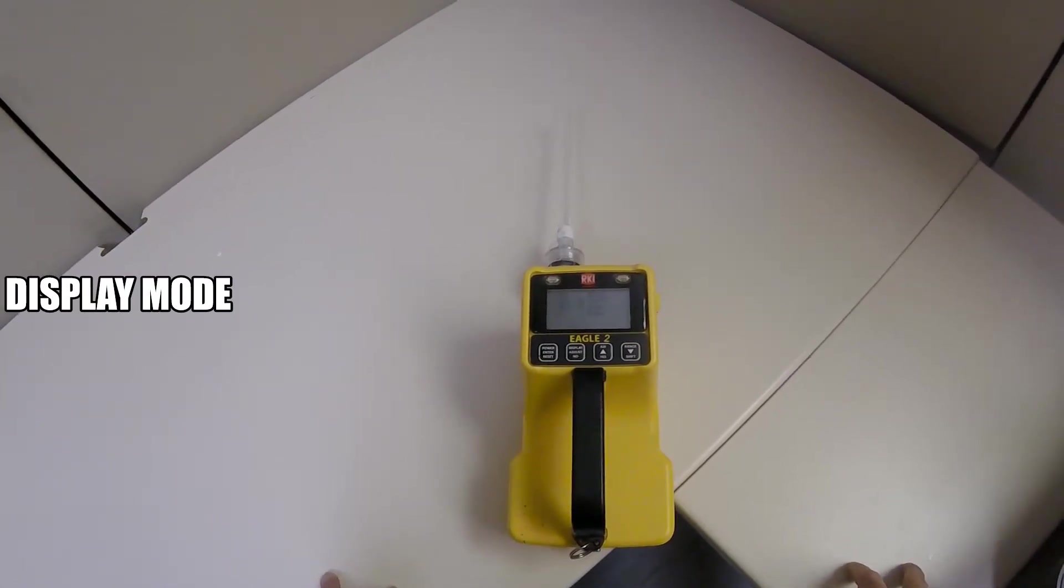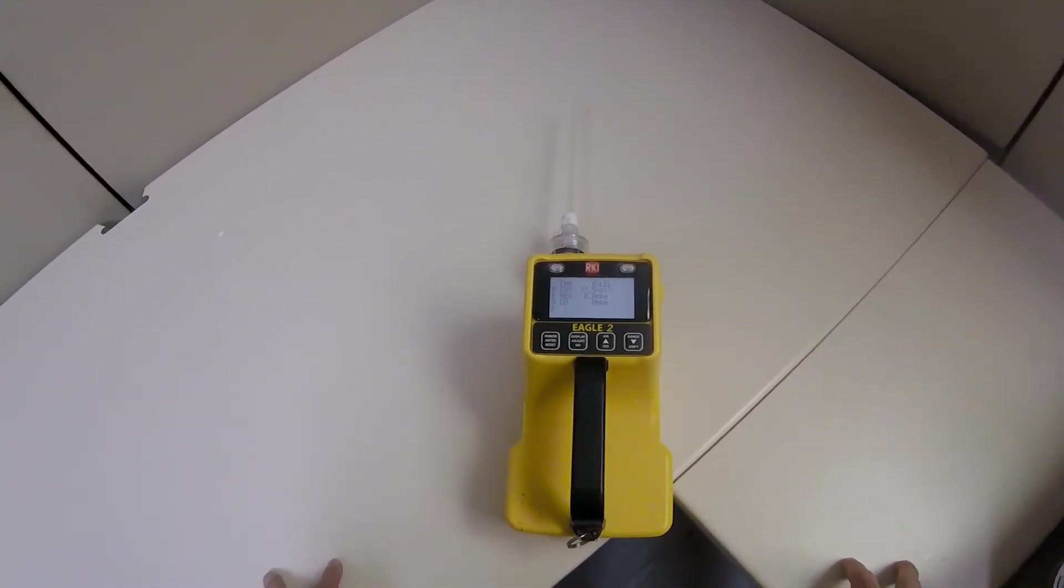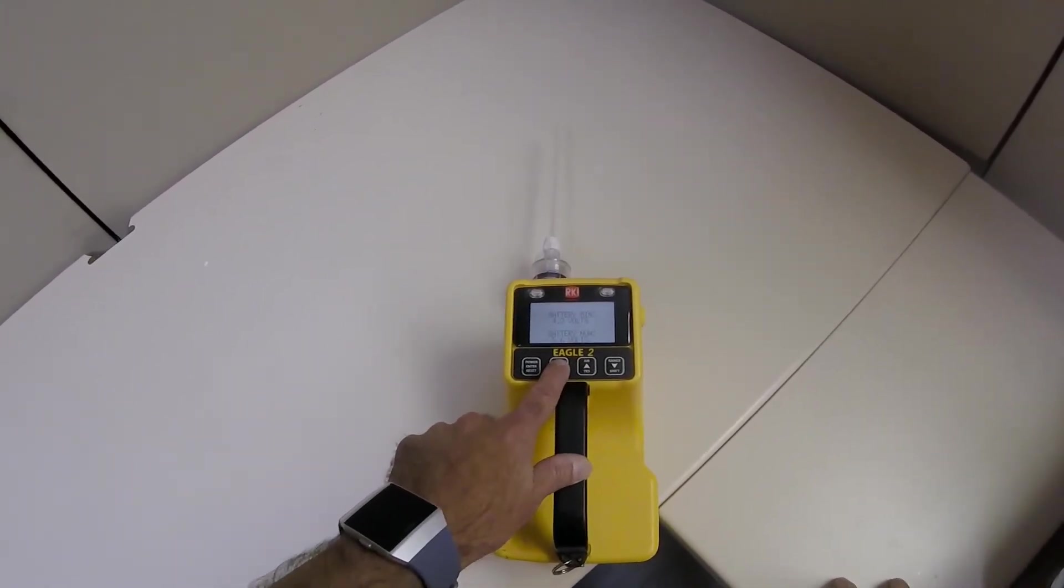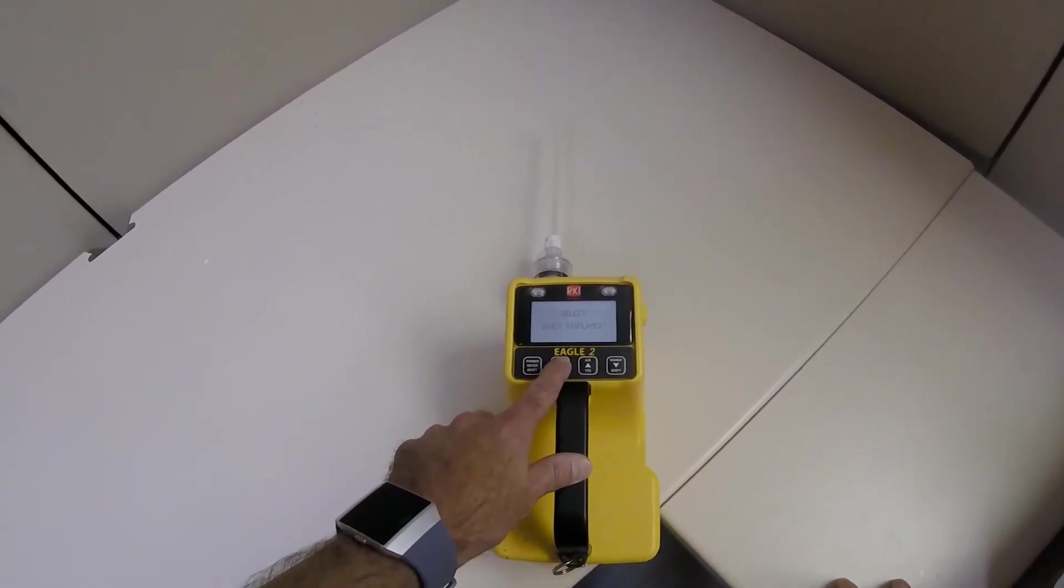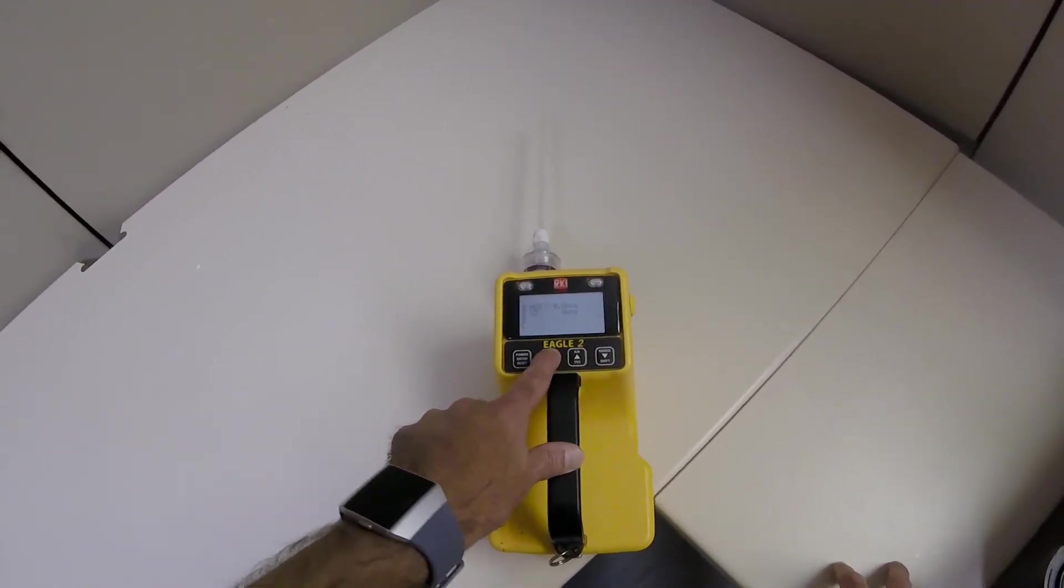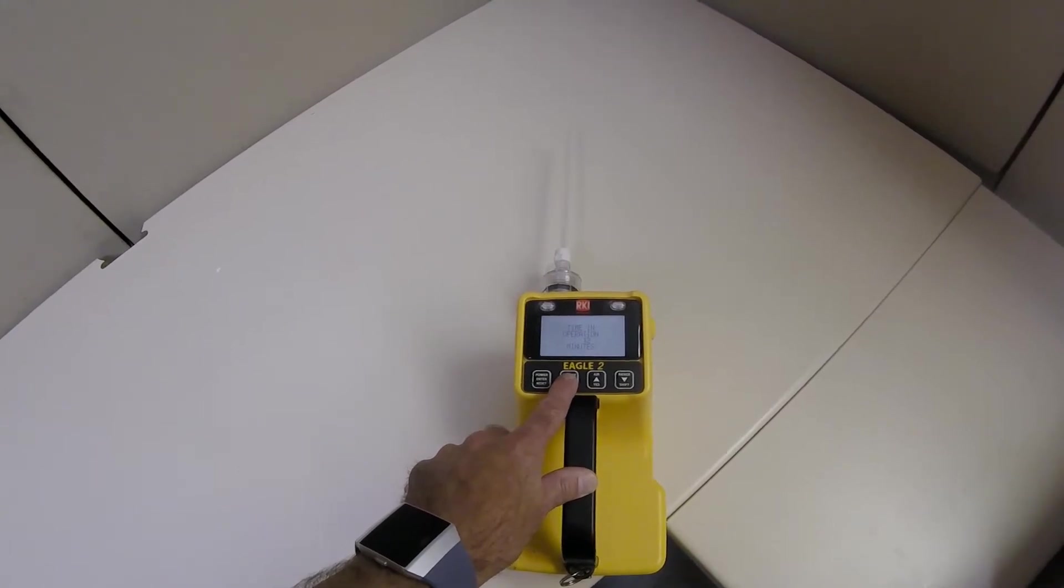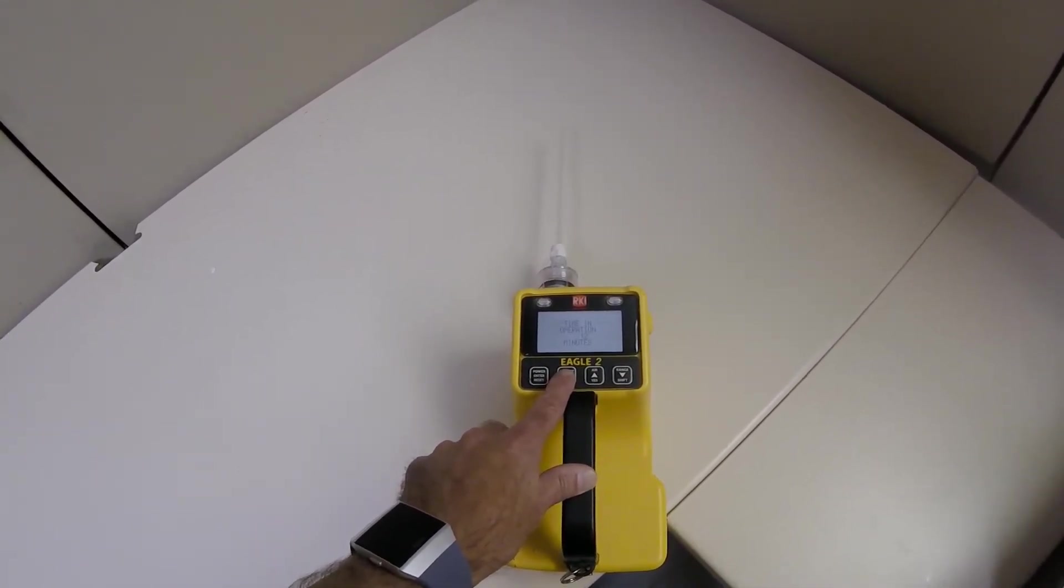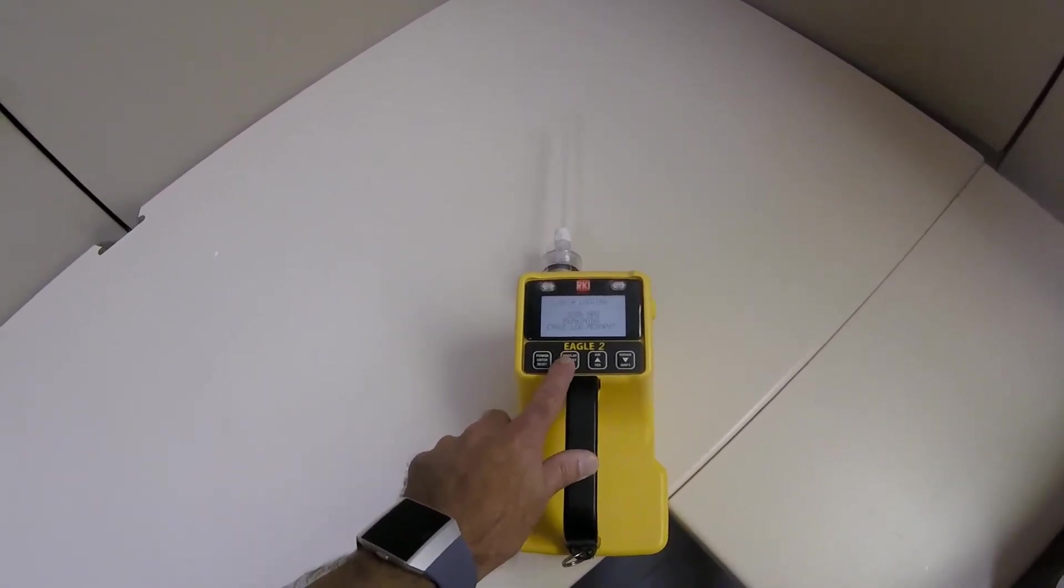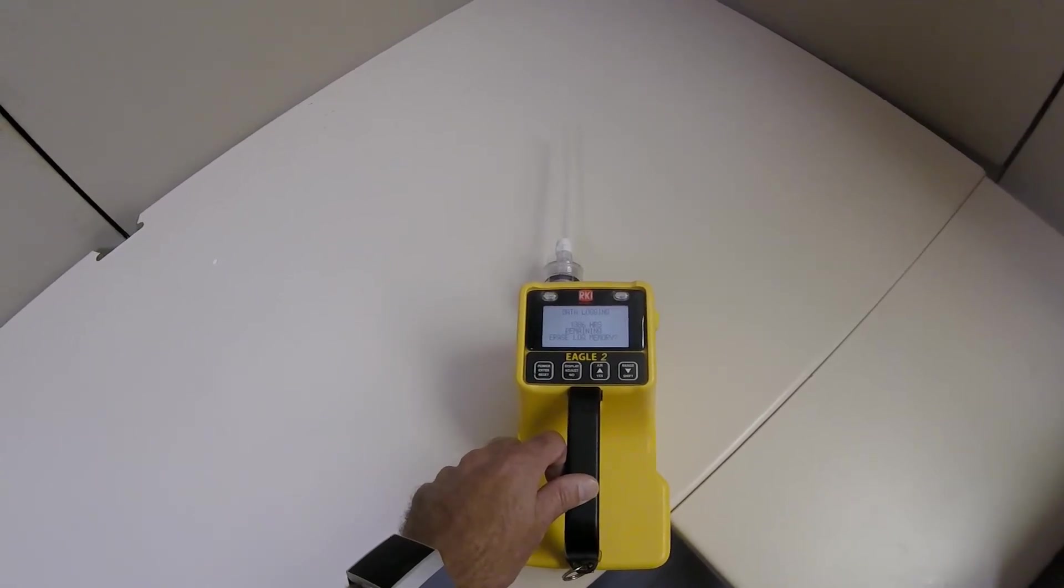To access display mode while the Eagle II is in normal operation, just press and release the display adjust node button. Use display adjust node to scroll through the following screens: Peak reading, peak reading battery voltage, gas display, methane elimination mode if your monitor is configured for this, STEL, TWA, view alarm settings, select user ID if turned on, select station ID if turned on, time and operation, date and time, data logging time remaining if turned on. Press and release the display adjust node button once more to get back to your normal operating screen.